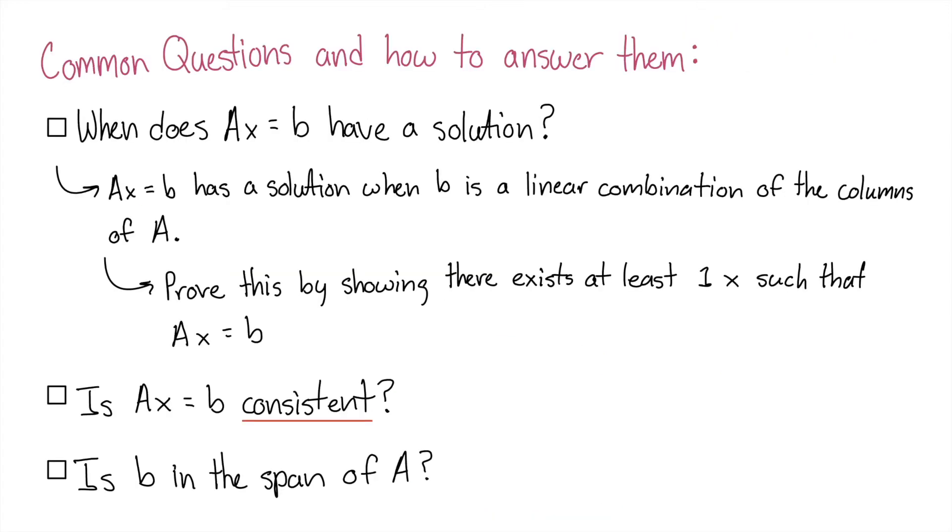Here's some common questions relating to AX equals B that you may encounter in linear algebra. When does AX equal B have a solution? All this means is, is B a linear combination of the columns of A? You prove this by showing that there's at least one solution X so that AX equals B. Another way to ask this is, is AX equal B consistent? And consistent just means is there a solution to the system of linear equations? That could be one solution, a unique solution, or there could be infinitely many solutions. And then is B in the span of A? It's all the same question, just worded differently.